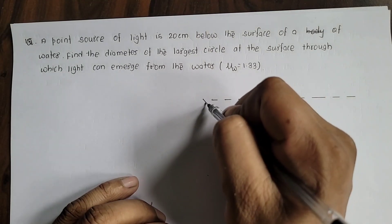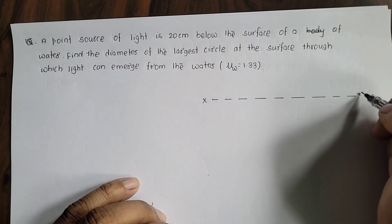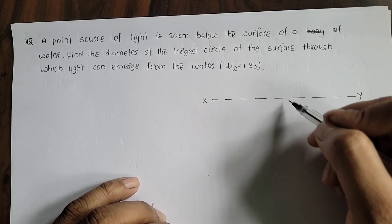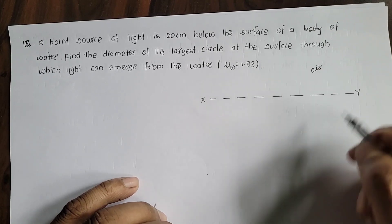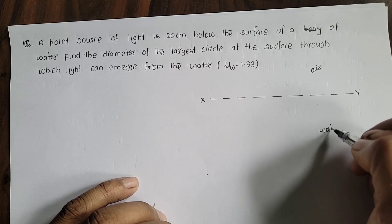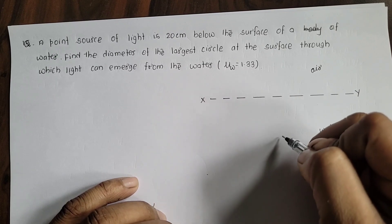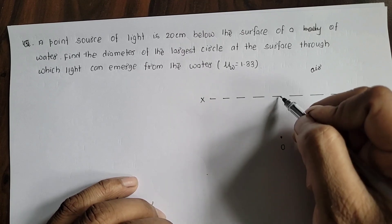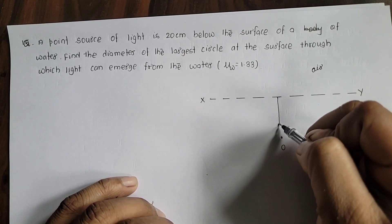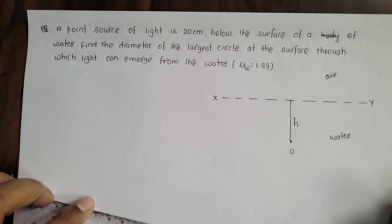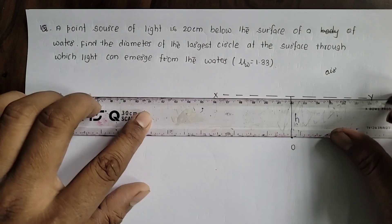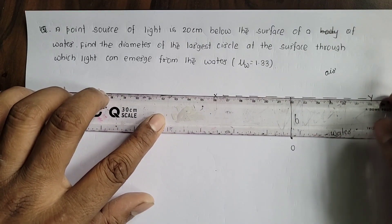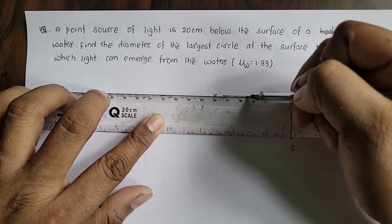Let XY be the surface that separates water and air — water below and air above. The point source is at depth below the water surface. Any light rays coming along the surface are called grazing incident rays.